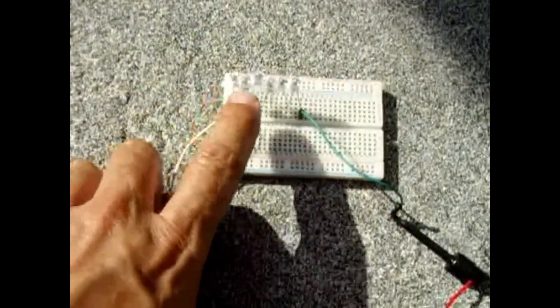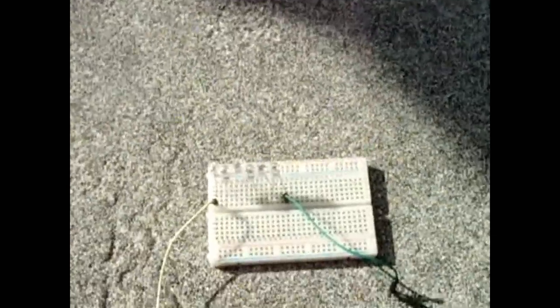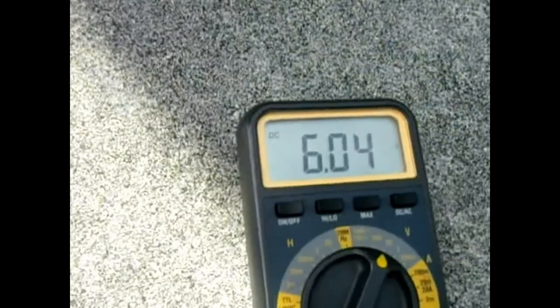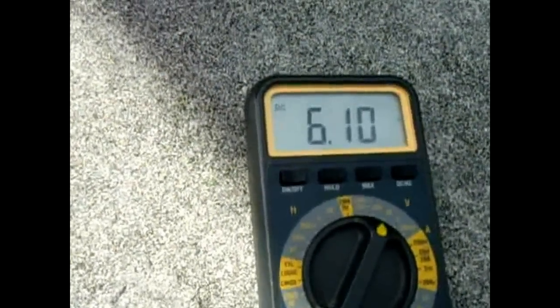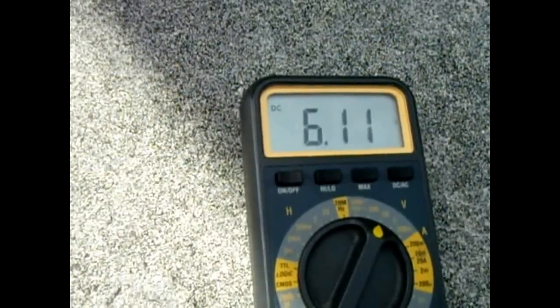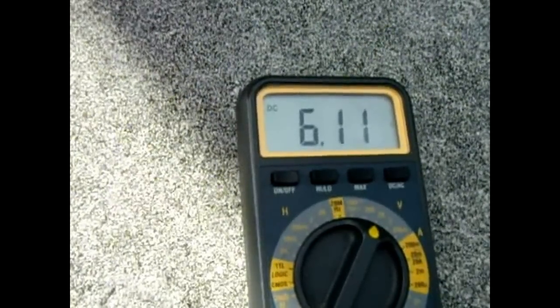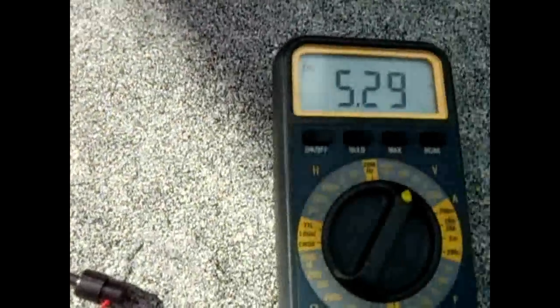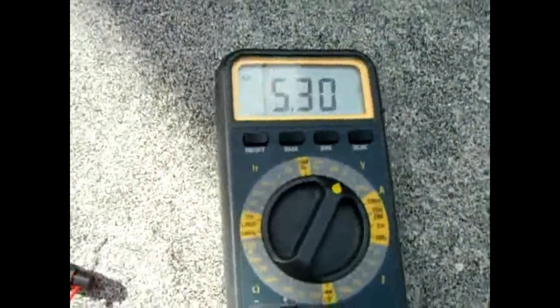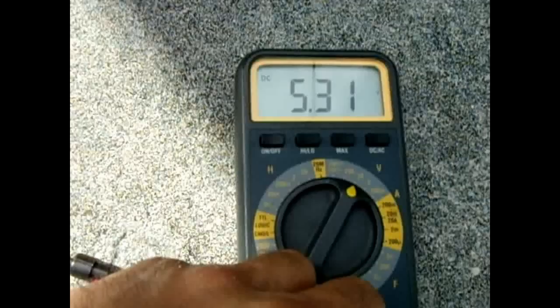So I got six of them in series, and if I put that directly into the Sun - and keep in mind there's still a cloud out so it's not getting full - this puts out around 6.4, 6.5 in that range of volts, and the current output is around 60 to 70 microamps.